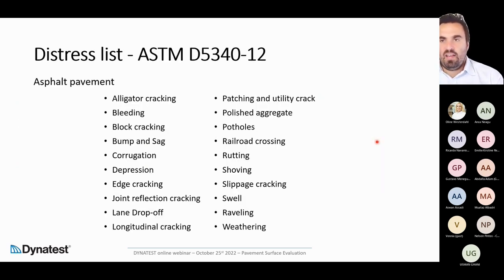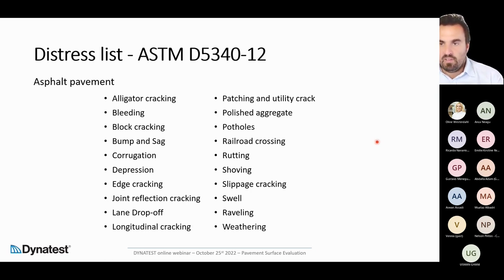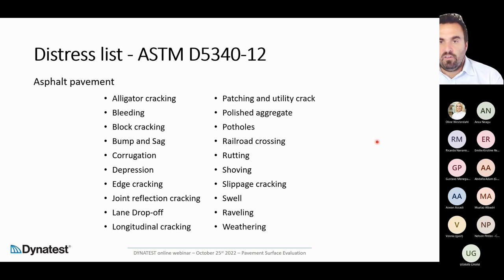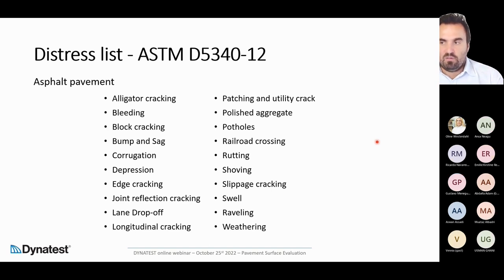To give you an idea of how many distresses need to be evaluated and why this process is quite long: for flexible pavement on a road, there are 20 different types of distress to identify and account for when going on site. It's not just alligator cracks, longitudinal/transversal cracks, block cracking, rutting, or potholes — which are the easiest to identify. You need to verify all the other distresses too. And as we'll see, the ASTM standard defines a procedure to characterize and measure each distress type.